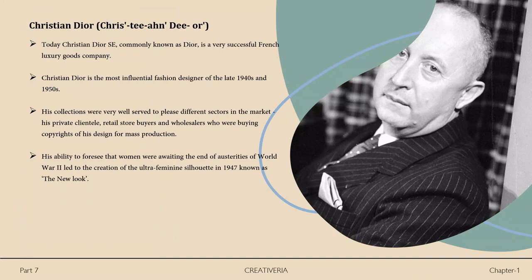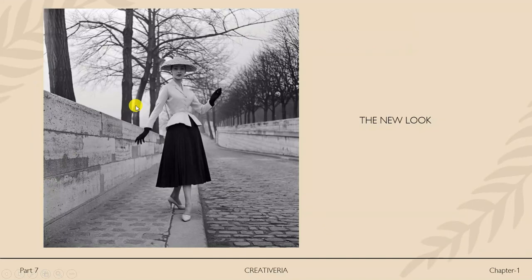Next is Christian Dior, commonly known as Dior — a very successful French luxury goods company. He is the most influential fashion designer of the late 1940s and 1950s. His collections served different sectors: private clientele, retail store buyers, and wholesalers buying copyrights for mass production. His ability to foresee that women were eager for change after the austerity of World War II led to the creation of the ultra-feminine silhouette in 1947, known as the New Look.